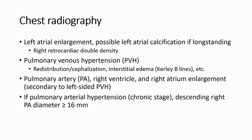On the radiograph, we look for left atrial enlargement, possible left atrial calcification in long-standing disease, pulmonary venous hypertension evidenced by redistribution and cephalization, interstitial edema with Kerley B lines, pulmonary artery enlargement, right ventricle and right atrium enlargement secondary to left-sided pulmonary hypertension, and pulmonary arterial hypertension where the descending right pulmonary artery diameter should be more than 16 mm.